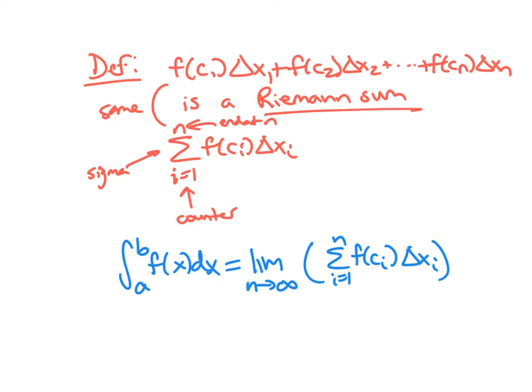So this process should feel somewhat similar to what we did with derivatives. We're basically taking something hard and we're approximating it by taking a limit of easy things. And so it's the same basic idea, it's just that calculating area is obviously a little bit different than calculating slope in terms of how you put it in practice.